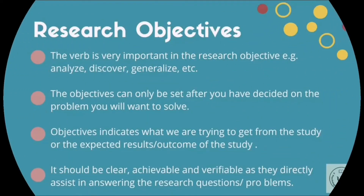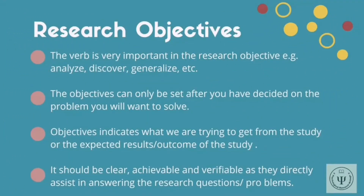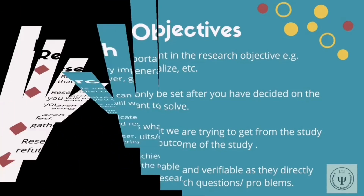Research objectives represent the work that is very important in the research. For example, you have to clearly state 'to analyze,' 'to discover,' 'to generalize' an XYZ relationship. Objectives can only be set after you have decided on the problem you want to solve. They indicate what you are trying to get from the study — the expected result or outcome — and should be achievable and feasible.